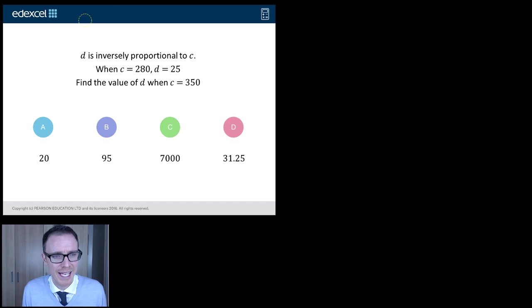So this one has been kindly written for diagnostic questions exclusively by the lovely Edexcel. It's on a topic that's come up year after year on GCSE, it's still on the new GCSE, but students tend to go wrong with it, so I thought it'd be a good one to look at. D is inversely proportional to C. When C is 280, D is 25. Find the value of D when C is 350.